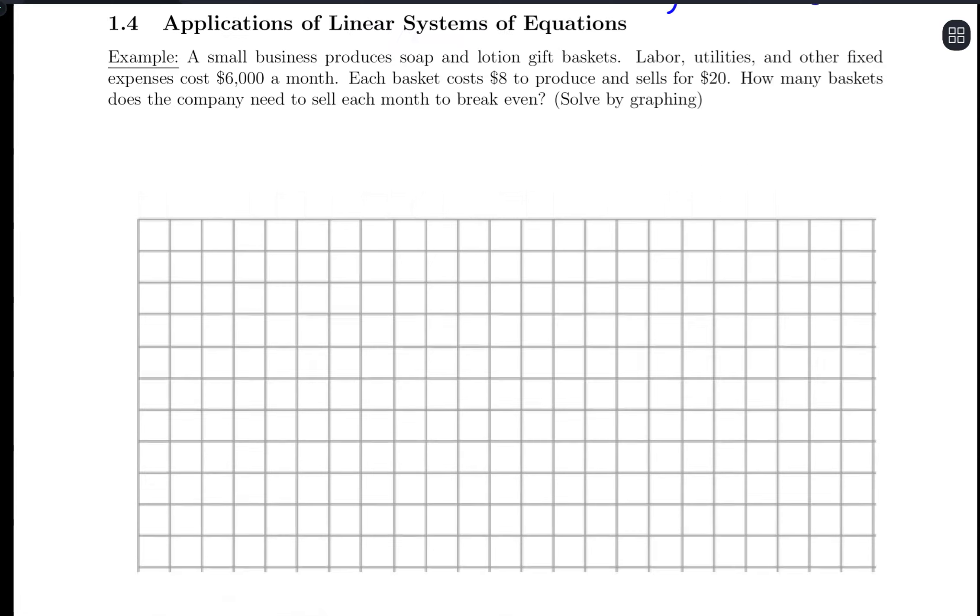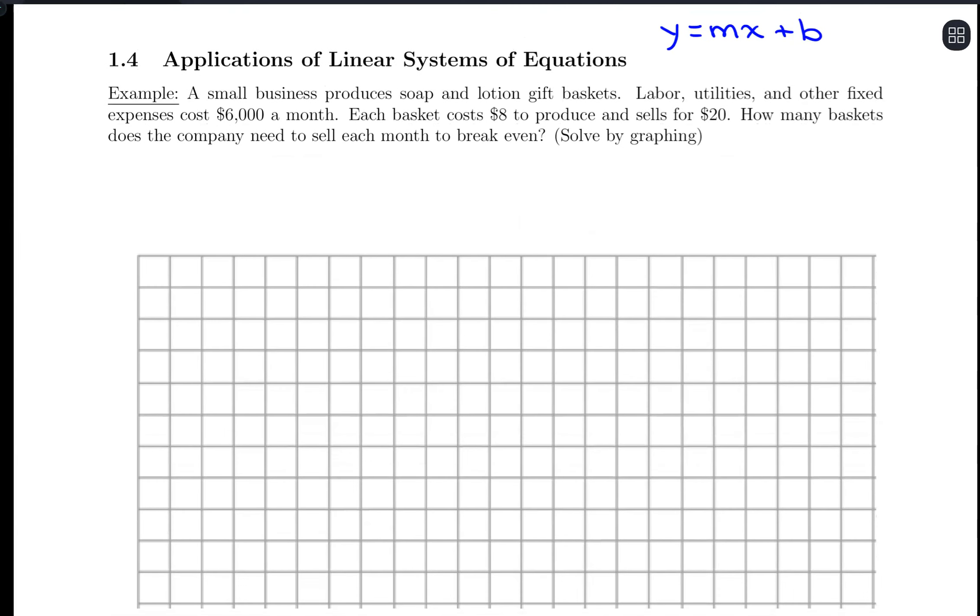So with word problems, the description will often be about describing a slope and intercept, where our slope is some rate of change and our intercept is some initial value. So we'll do one with graphing and then we'll do one algebraically. We have a small business produces soap and lotion gift baskets. Labor, utilities, and other fixed expenses cost $6,000 a month.